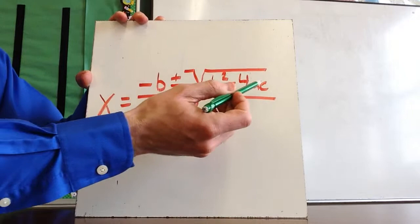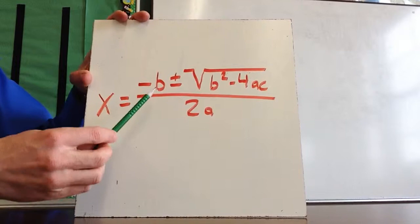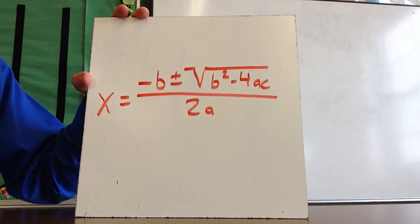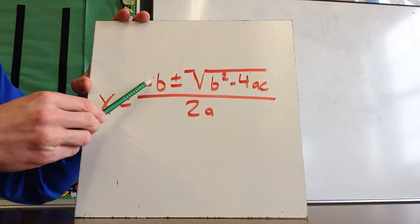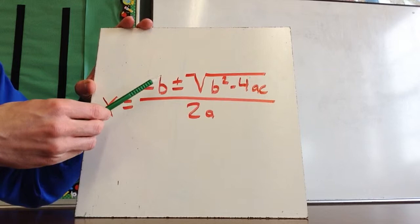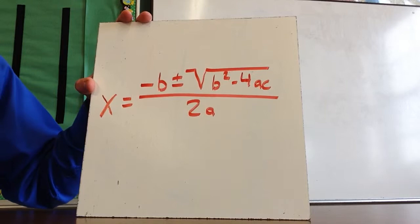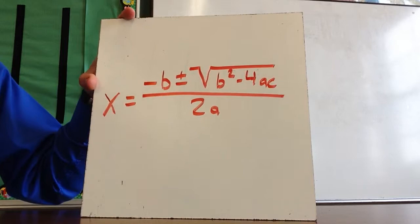A couple of key things to keep in mind: first, do the inside of the radical and then take the square root of all of that. Secondly, negative b over 2a should look similar to the equation for the axis of symmetry — that's partly where this formula comes from. The plus or minus means you get two separate calculations: negative b plus the square root, divided by 2a, and negative b minus the square root, divided by 2a. Please make sure you get this formula copied into your notes.